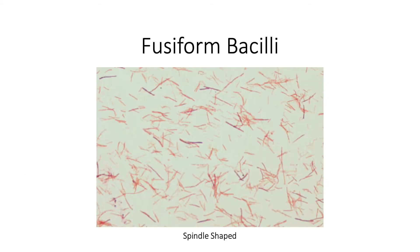Then you have your fusiform bacilli. Unlike your regular bacilli, the fusiform bacilli is spindle-shaped, which means the ends of this bacilli are tapered. You can evidently see this in the figure wherein your rods have very pointy ends.